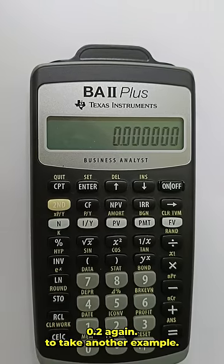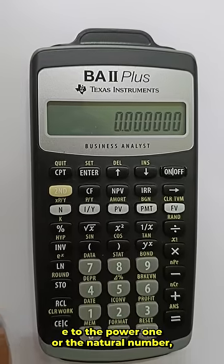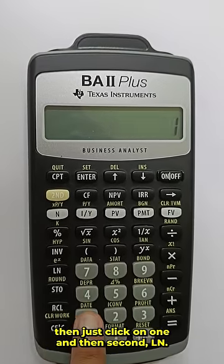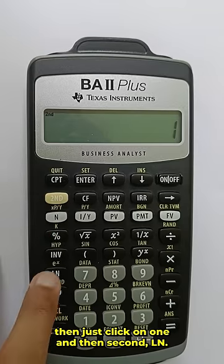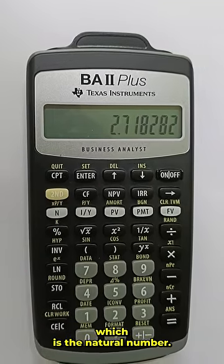To take another example, if you want to find out the value of e to the power 1 or the natural number, we'll just click on 1 and then second ln. So this is 2.718282, which is the natural number.